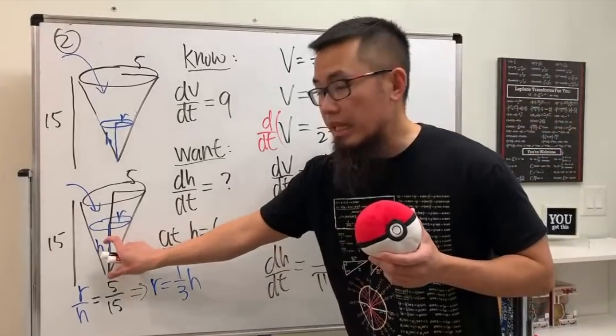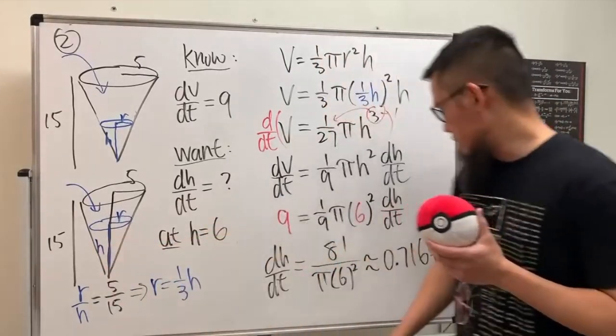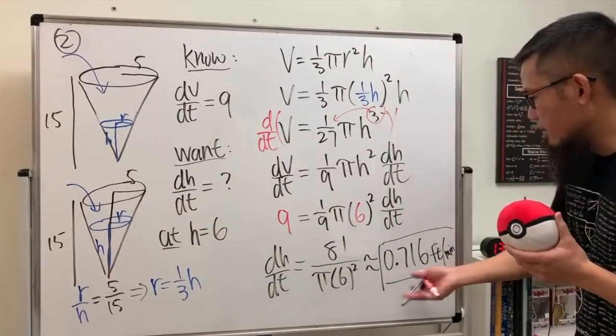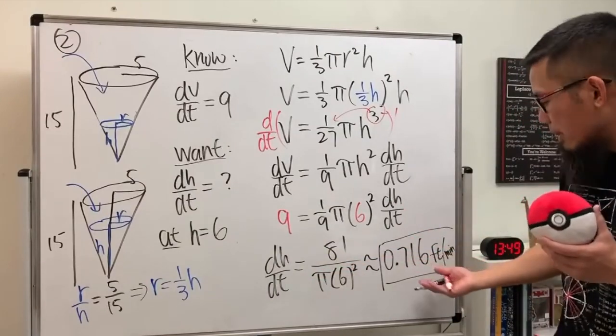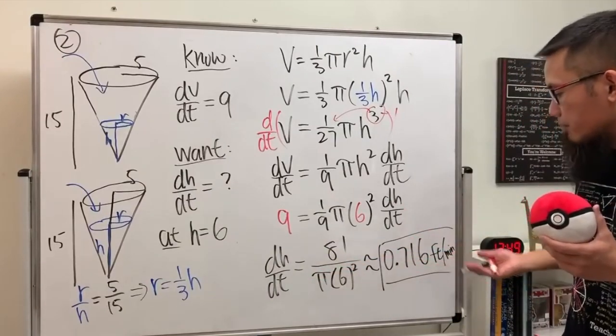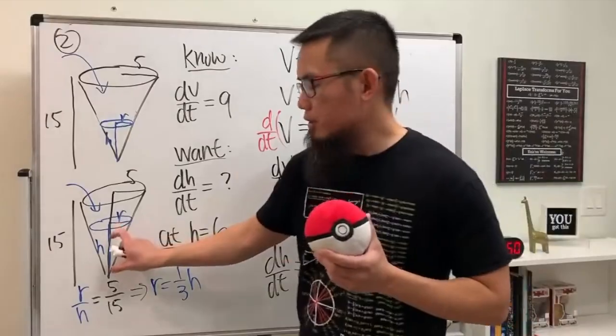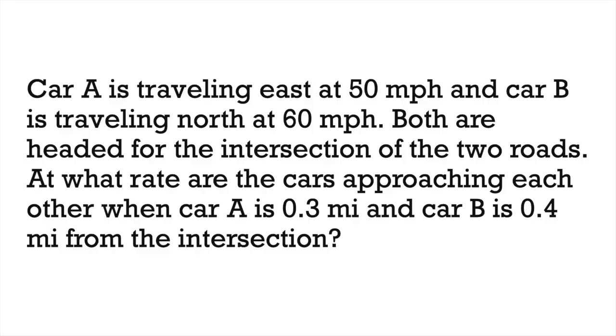We get dh/dt = 81/(36π) ≈ 0.716. The unit is feet per minute, since h is a distance in feet and this is a rate. The answer is positive because the water level is getting higher and higher.